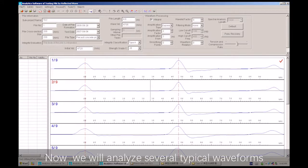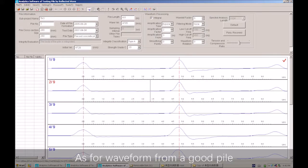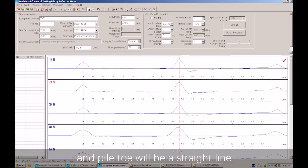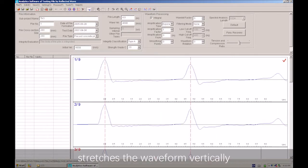Now we will analyze several typical waveforms. Good pile waveform: As the waveform from a good pile, wave crests will appear separately at pile head and pile toe. And if the pile body has no defects, the waveform diagram between the pile head and pile toe will be a straight line. Double-clicking on the waveform area stretches the waveform vertically.